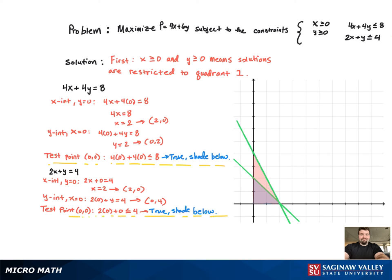Now we have our feasible region. It's where the two shaded regions overlap. And now we need our corner points. We get the point 2, 0 as one corner point, 0, 2, and the point 0, 0.